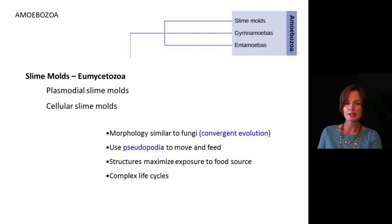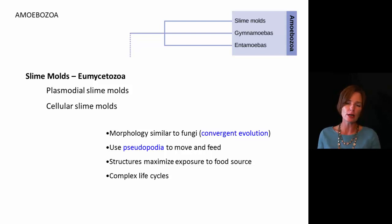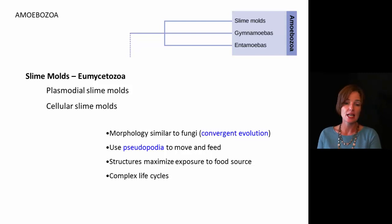Convergent evolution basically states that when organisms are fulfilling the same ecological roles — taking on the same food sources, living in the same type of environments — over time they begin to look very similar because that morphology is very effective in that particular niche. Fungi are going to be really similar to these in that they also obtain nutrients from their environment, having a big surface area to do so.